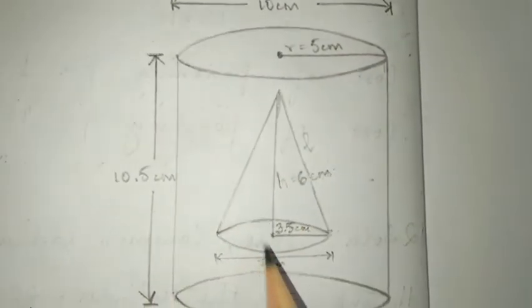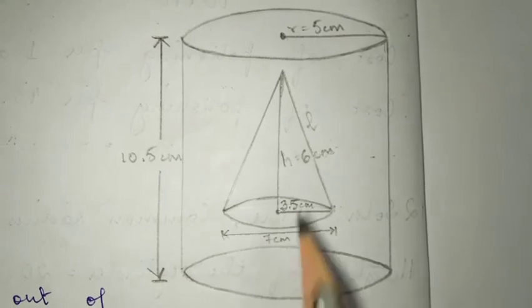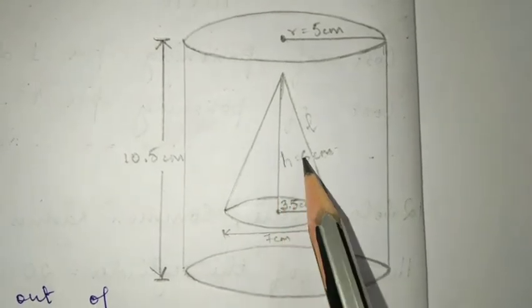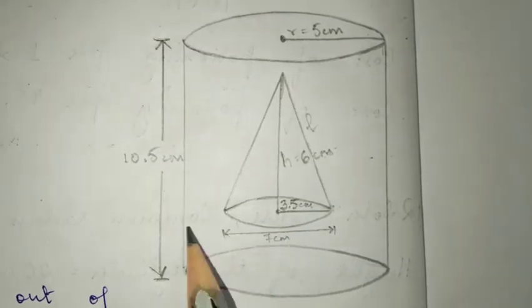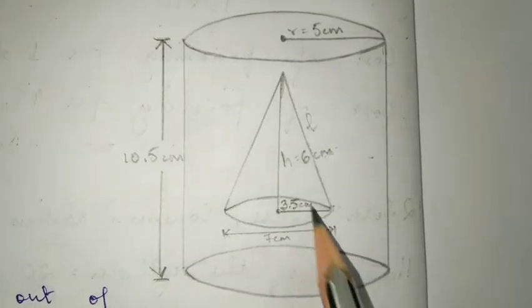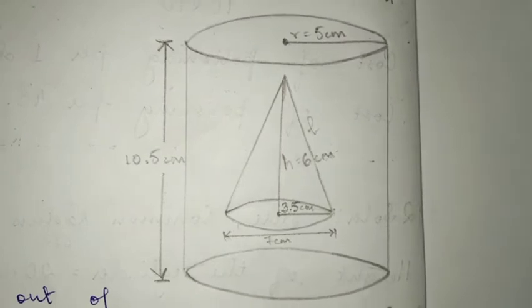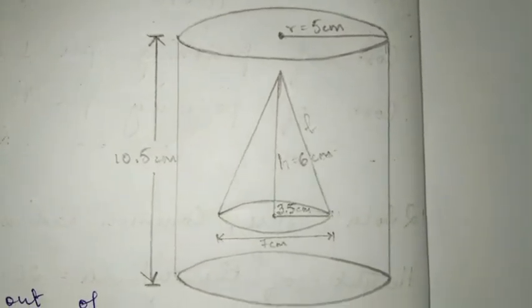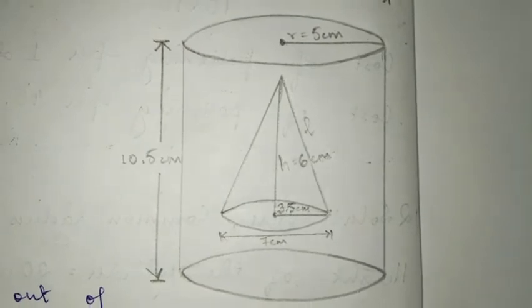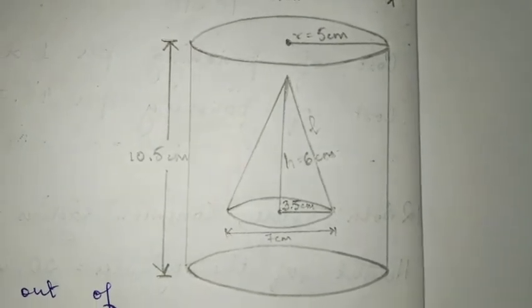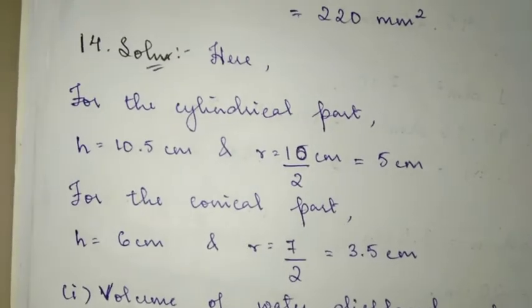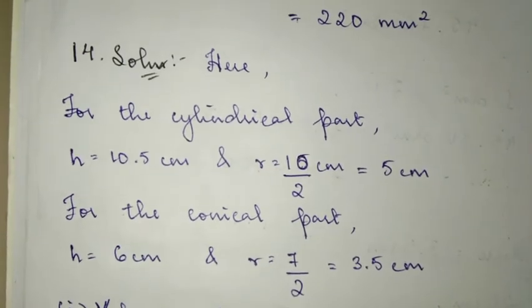Now, this is the answer for question number 13. I have to show the cone. So, cone, diameter 7 cm, so radius is 3.5 cm, height is 6 cm. The diagram is here, and the common radius is shown.